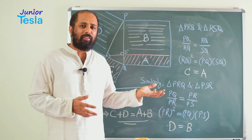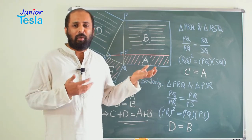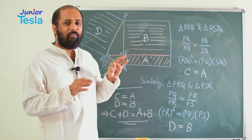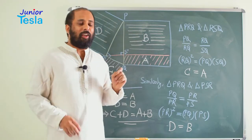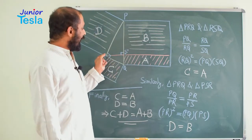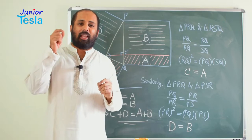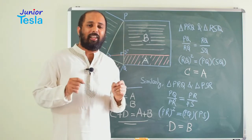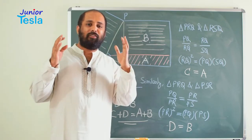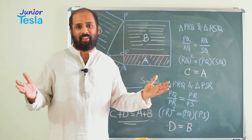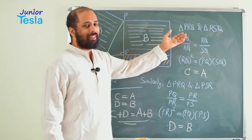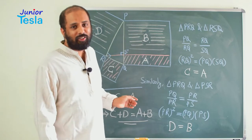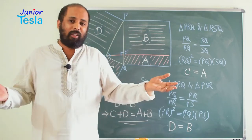I think this is one of the very simplest proofs of Pythagoras theorem, which uses only one simple property. That is, if you draw a perpendicular line from the right angle to the hypotenuse of the right angle triangle, then we are going to have three similar triangles. Taking two similar triangles at a time, we have got two equations, and we are just adding those two equations and the proof is over.